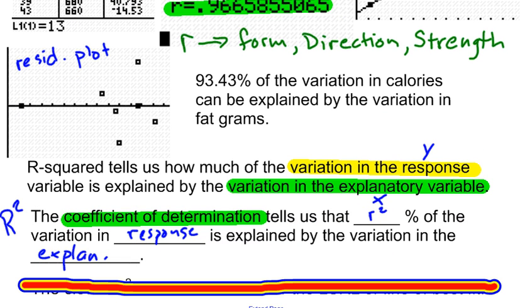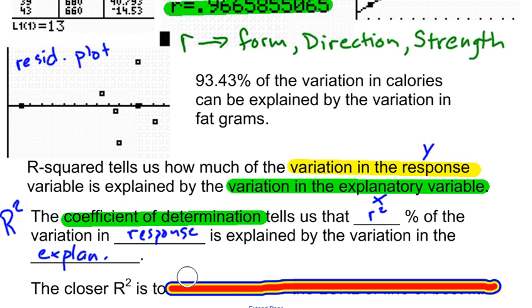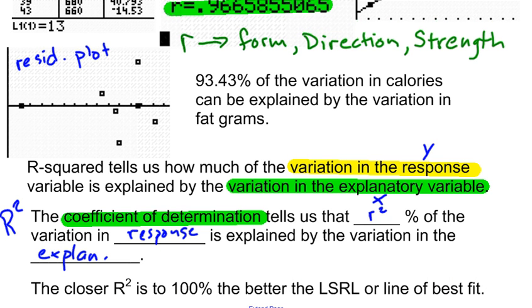There's one more thing that I'll say here, and this is another thing about R squared. And that's that the closer R squared is to 100%, the better the line of best fit. So the closer I get to 100%, the better the line of best fit. So that R squared is another way to measure how good my line of best fit is. But that should not be the only thing that I look at when I'm deciding if my line of best fit is good or not.